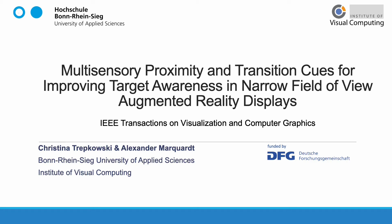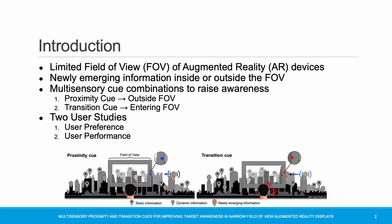Welcome to the presentation of our TVCG submission titled 'Multisensory Proximity and Transition Cues for Improving Target Awareness in Narrow Field of View Augmented Reality Displays.' My name is Alexander Markwart. Augmented reality applications allow users to enrich their real surroundings with digital content. Due to the limited field of view of AR devices, it can be difficult to become aware of newly emerging information inside or outside the field of view. In this paper, we evaluate how multisensory cue combinations can improve awareness for moving out-of-view objects, especially for narrow field of view AR displays.